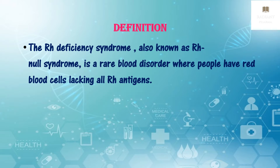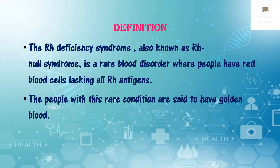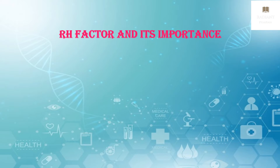Now let us go through the definition of RH deficiency syndrome. RH deficiency syndrome is also known as RH null syndrome. It is a rare blood disorder where people have red blood cells lacking all of the RH antigens. The people with this rare condition are said to have golden blood.